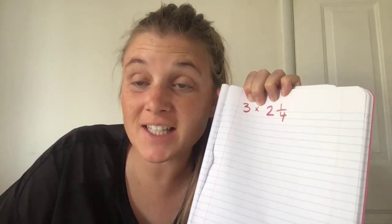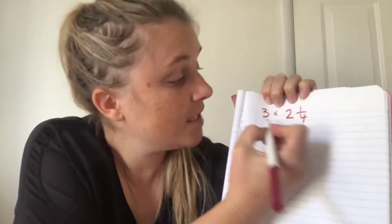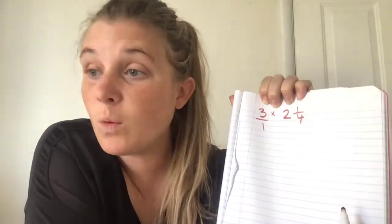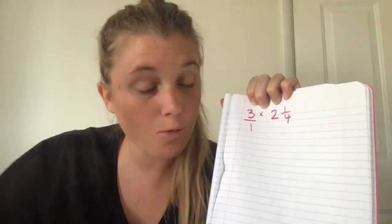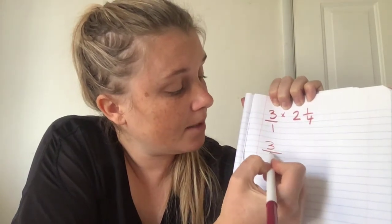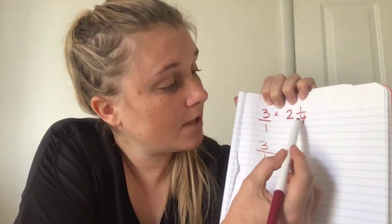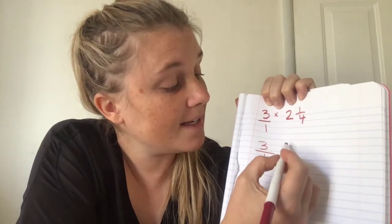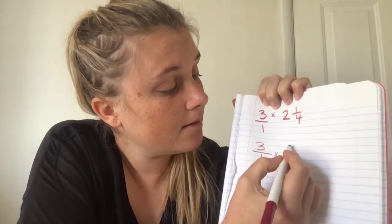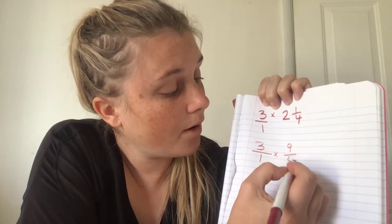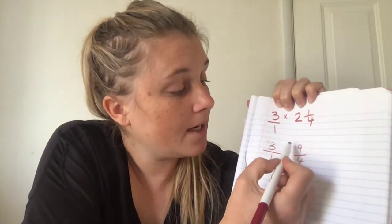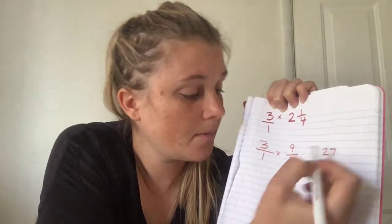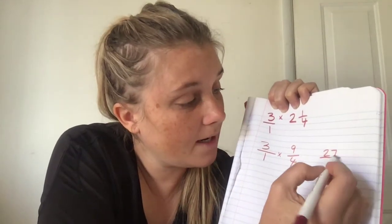Did you get an answer? Let's do it together. So, three goes over one. What's my first instruction? Change mixed numbers into improper fractions. Here we go. Three over one can stay. It's a good improper fraction. Two times four is eight, plus one is nine. Nine-fourths. Okay, three times nine is twenty-seven. One times four is four.